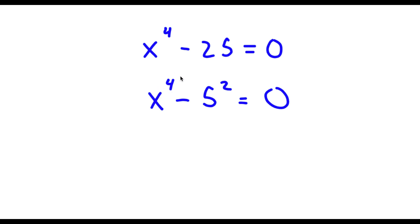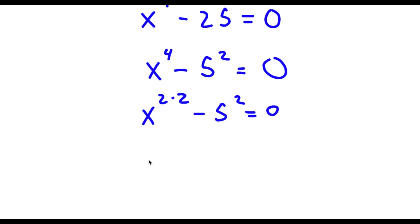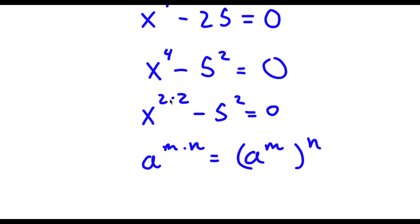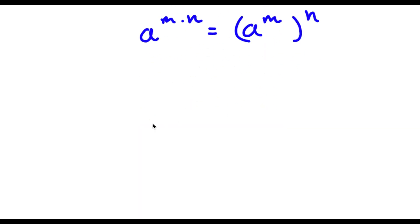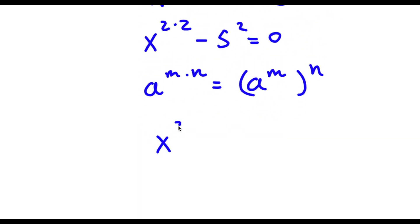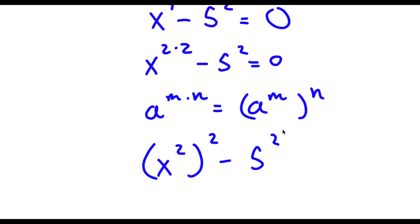Now x to the power of 4 is the same thing as x to the power of 2 times 2. And if I have something in the form A to the power of m times n, this is the same thing as A to the power of m to the power of n. So x to the power of 2 times 2 equals x to the power of 2 to the power of 2. So I have (x²)² minus 5² is equal to 0.